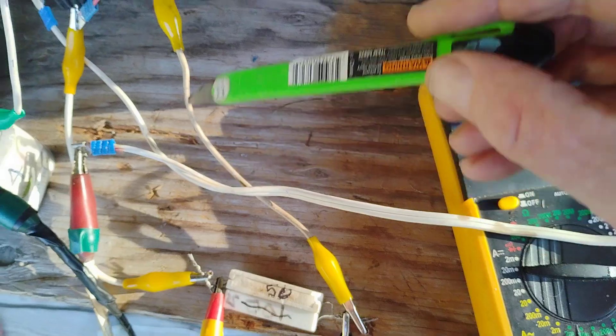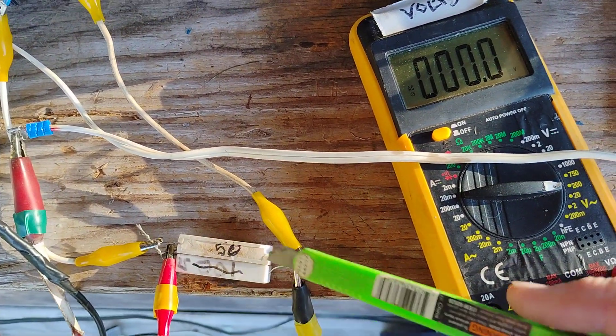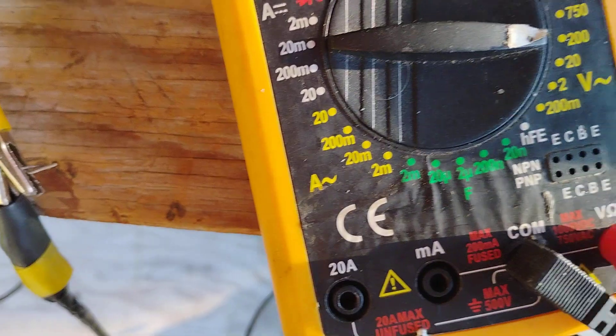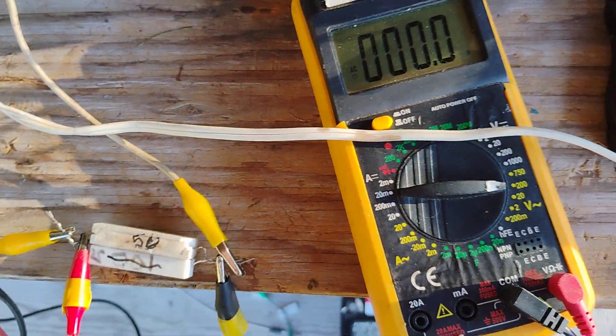And then the two leads go to each side of the resistor. You can see the yellow wire here, yellow wire here. And then I have the voltmeter across this. The voltmeter is in AC, AC volts. Okay, so here we go.